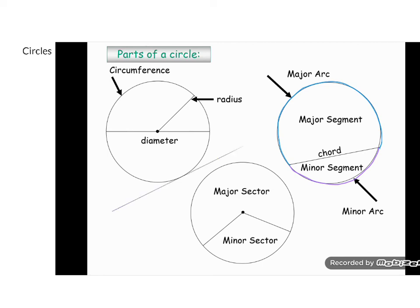If you draw a line that only touches the circumference of the circle once, it is called a tangent. A line that touches not only once but twice, and therefore cuts through the circle, is called a secant.